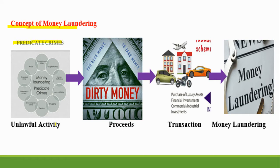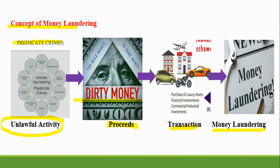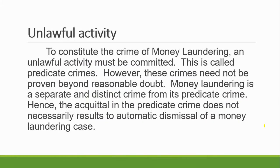The predicate crimes are also called unlawful activity — like drug trafficking, human trafficking, smuggling, kidnapping. Because of the predicate crime, you have the proceeds, and this proceeds is called the dirty money. The dirty money — you transact it: you purchase a luxury asset, financial investment, commercial or industrial investment — that is the transaction, and there is money laundering. There is an unlawful activity, there is dirty money, and you transact it.